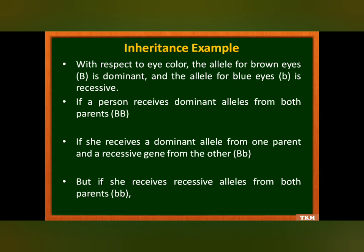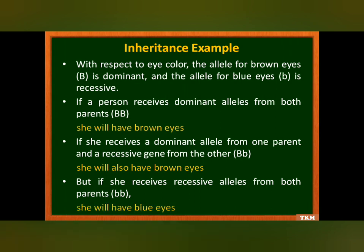Let's take the example of eye color. The allele for brown eye — capital B — is dominant, and the allele for blue eye — small b — is recessive. If a person receives dominant alleles from both parents, they will have brown eyes. If they receive one dominant and one recessive allele, because the dominant allele is present, the eyes will still be brown. But if they receive a recessive allele from both parents — with no dominant allele present — both are recessive, so the recessive color will be expressed and the eyes will be blue.